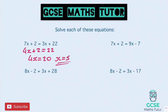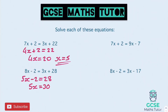Onto the one below — take away 3x from both sides, we get 5x minus 2 equals 28. Add the 2 over, so we get 5x equals 30, and then divide by 5, we get x equals 6.